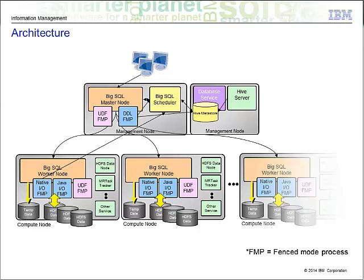In this diagram, you can see the BigSQL daemons that run on each node in the cluster, shown in orange. You have one master node at the top. The master node is responsible for accepting client connections, accepting queries, doing all the query planning, query optimization, and then pushing the query down to the worker nodes below.